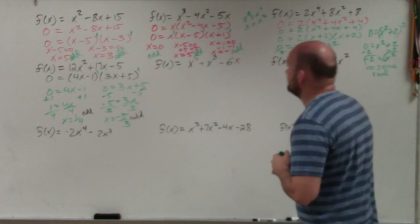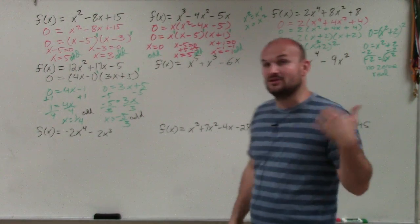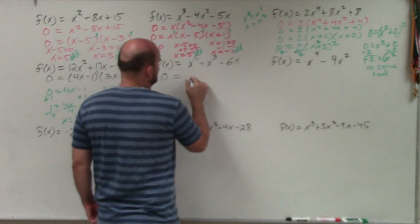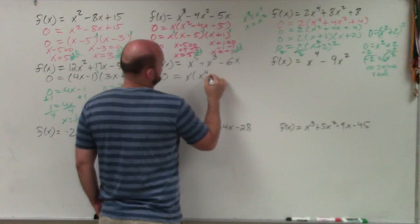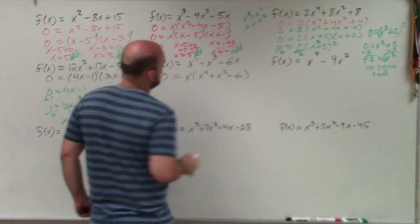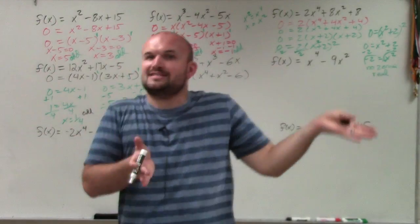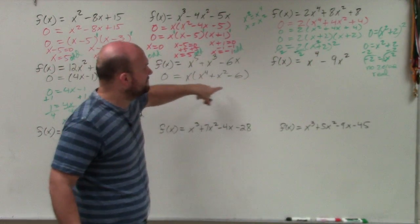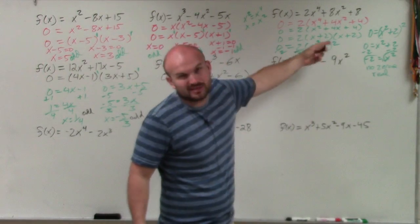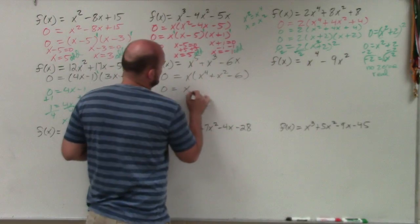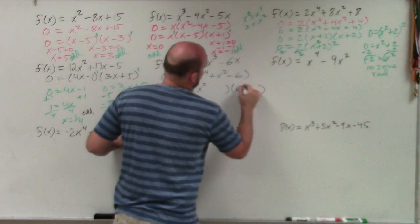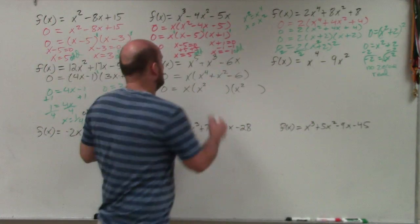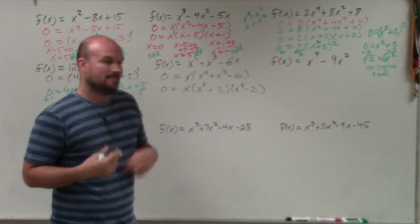Now let's look at f of x equals x to the fifth plus x cubed minus 6x. First, we factor out an x, setting equal to 0, giving x times x to the fourth plus x squared minus 6. Just like before, I can replace x to the fourth with x squared and x squared with x, treating it like a quadratic. My two factors are going to have x squared instead of x. What two numbers multiply to give negative 6 and add to give positive 1? That's going to be positive 3 and negative 2.